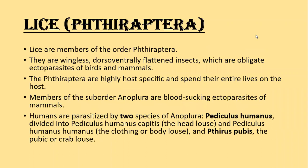First, I'm going to discuss lice infestations. Lice are members of the order Thera peteria. They are wingless, dorsal-ventrally flattened insects, which are obligate ectoparasites of birds and mammals. Thera peteria are highly host-specific and spend their entire life on the host. Members of the sub-order Anopleura are blood-sucking ectoparasites of mammals.